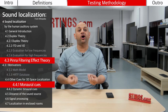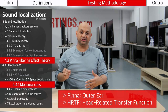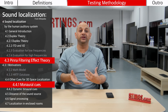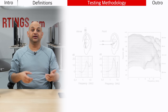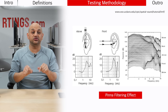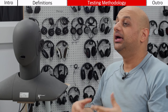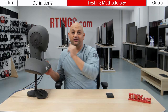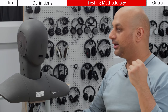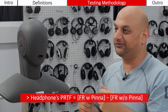Next up are pinna filtering effect theory and monoroll cues. These sections describe how the human auditory system uses the shape of the pinna — the outer ear, which is part of the individual's HRTF — for vertical localization as well as front-back localization. Since the pinna shape is complex and asymmetrical both vertically and horizontally, different pinna resonances become active depending on the location of the source, adding direction-specific patterns into the frequency response recognized by the auditory system. To measure the interaction between the pinna and headphones, we devised a test we call PRTF — pinna related transfer function. We got an extra ear for our dummy head, removed the pinna, and measured the frequency response of each headphone twice: once with the intact ear and once without the pinna. The difference between the two is what we call the PRTF of the headphone.